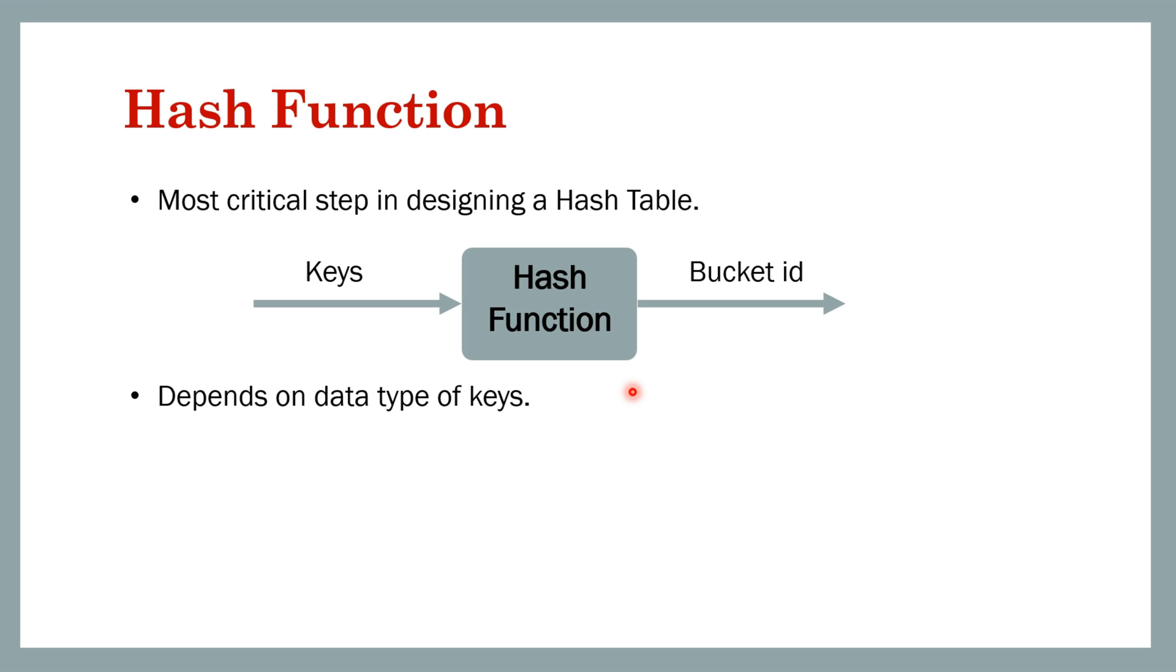Sometimes it may be integral, sometimes it may be a string or some complex object. For example, let's say we have an integer key. Then we can simply use modulo as a hash function, and B is the number of buckets. So modulo B will return 0 to B minus 1, that is B values.